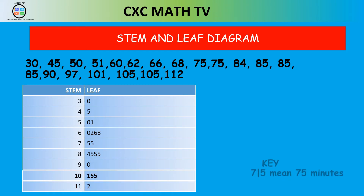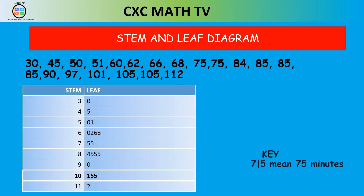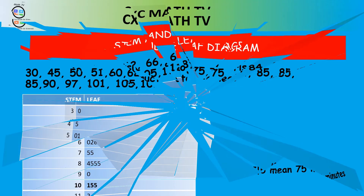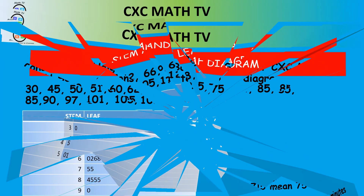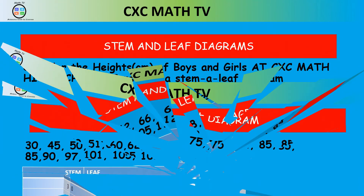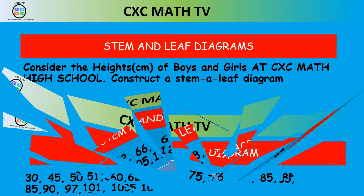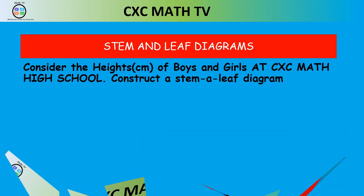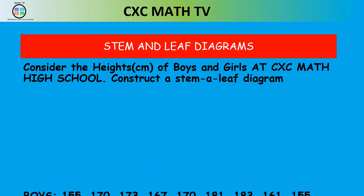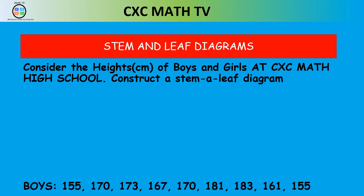Sometimes a stem and leaf diagram has to depict two sets of data. Consider the heights of boys and girls at CXC Math TV High School and construct a stem and leaf diagram. The heights of the boys are 155, 170, 173, 167, 170, 181, 183, 161, and 155.